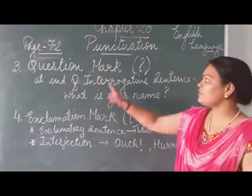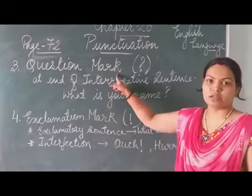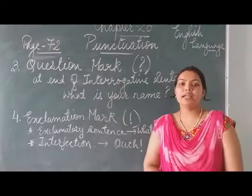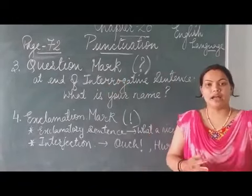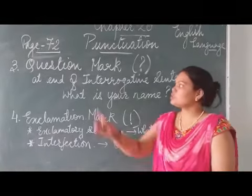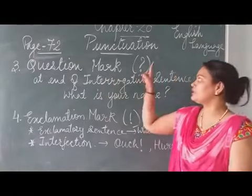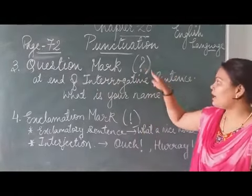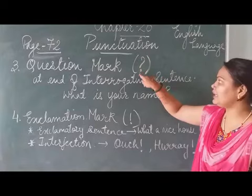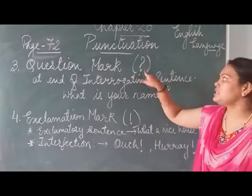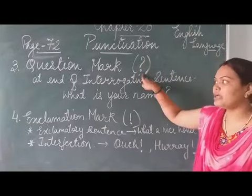Next is our question mark. So question mark — we have also studied this in our kinds of sentences. This is the sign of a question mark: one circle-type shape and one dot. This is the sign of a question mark.